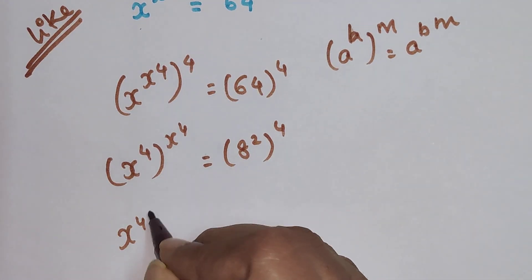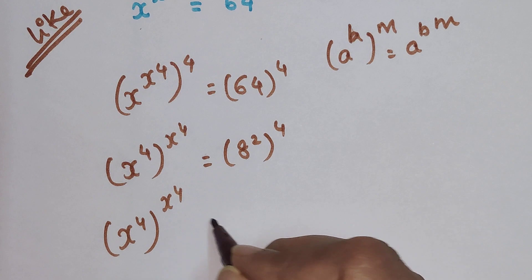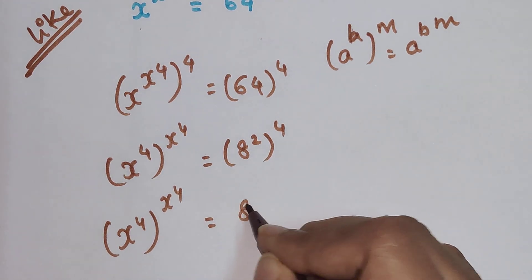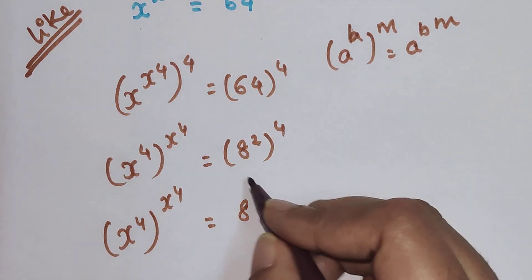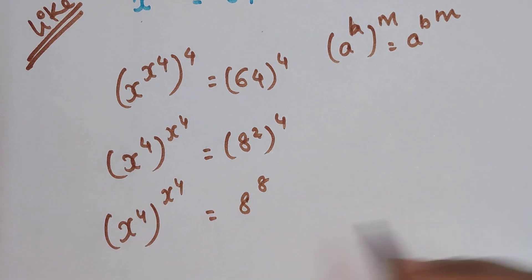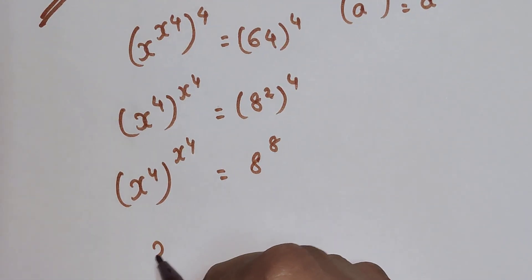So we still have (x^4)^(x^4) = 8^8. From this I can say that x^4 = 8.